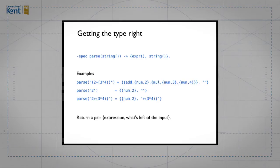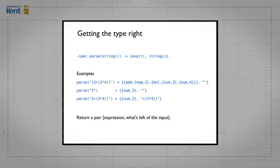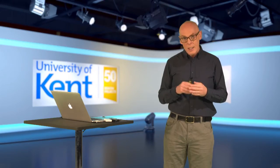For example, if we have the full expression — the parenthesized expression '2 plus 3 times 4' — what we get back is the expression representation of it plus an empty string. If we have the string with just '2', we get back the number 2 as an expression plus the empty string. But if we parse the string beginning with '2' after an initial parenthesis has already been consumed, we get back the number 2 plus the remainder of the string. So the result of parse is the expression found at the beginning, plus whatever remains of the string that wasn't consumed.